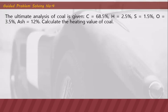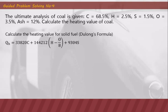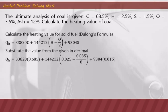Guided problem solving number four: the ultimate analysis of coal is given as carbon 68.5%, hydrogen 2.5%, sulfur 1.5%, oxygen 3.5%, and ash 12%. Calculate the heating value of the coal. Since this is a solid fuel, we use Dulong's formula, substituting the values of carbon, oxygen, hydrogen, and sulfur in decimal form. The heating value of the coal is 26,280.63 kilojoules per kilogram.